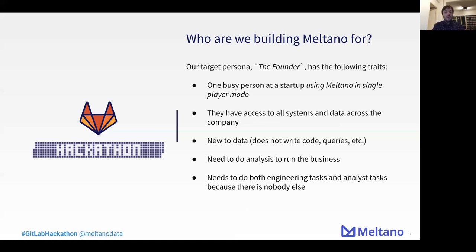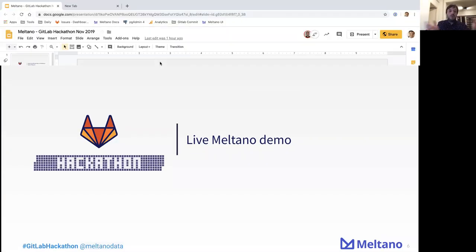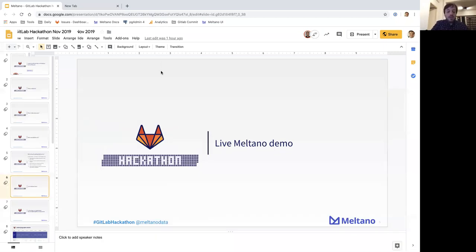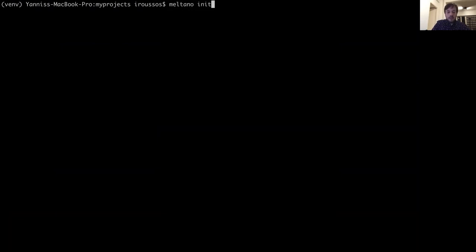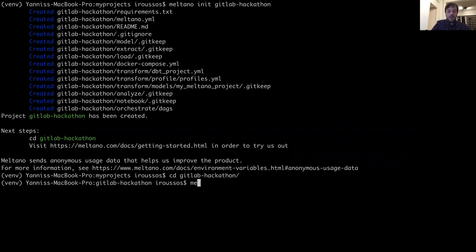In the current version of Meltano, we are focusing on running Meltano as a standalone application, supporting well-defined APIs, and providing an end-to-end flow using Meltano UI — our web-based interface — so that someone can extract data from those APIs and load it to a local Postgres. So instead of telling you what Meltano is, let me show you how it works. I have the latest version of Meltano installed on my laptop. I'm going to initialize a new Meltano project — let's call it GitLab Hackathon — and go to the directory and start Meltano UI.